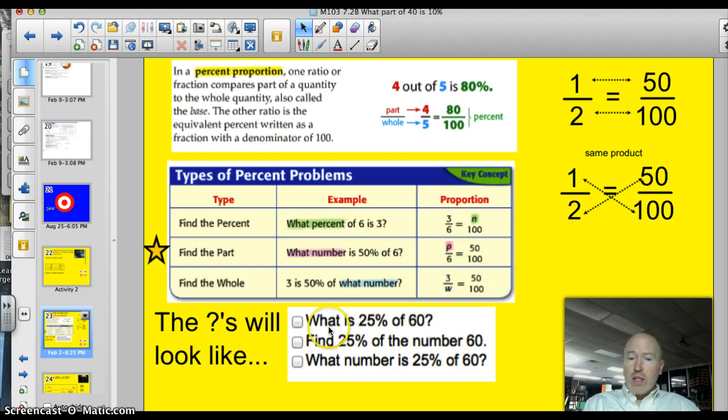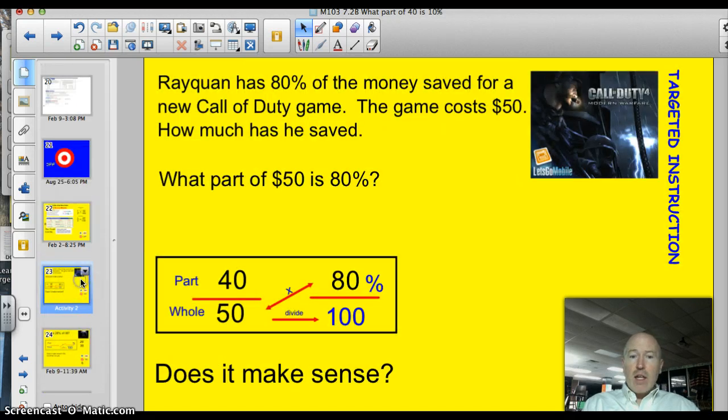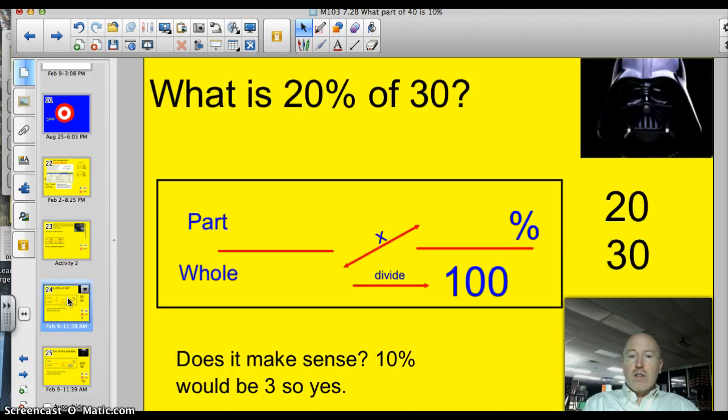Alright, we can move the star down to find the part tonight. And this P up here in the box is the piece that's going to be missing. And we'll use those other numbers to find it. Tonight, questions are going to look like this. What is 25% of 60? Find 25% of the number 60. And what number is 25% of 60? All asking about the part. I'm going to move this slide here and start off. Here's the first one tonight. And, oh, look, Darth Vader stopped by for a little tutorial on this.